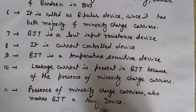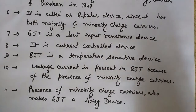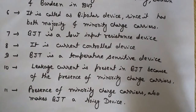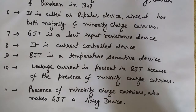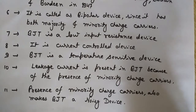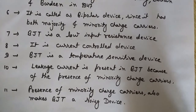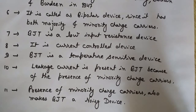The presence of minority charge carriers also makes BJT a noisy device compared to FETs. There are two reasons: first, BJT has two junctions — emitter junction and collector junction — and charge carriers crossing two depletion regions creates noise. Second, BJT is bipolar, having both electrons and holes as majority and minority carriers, making it noisier than a unipolar device like FET, where only one type of majority carrier is present.